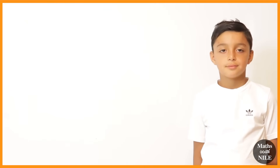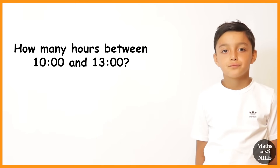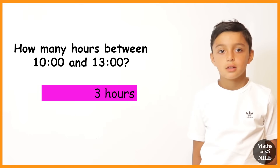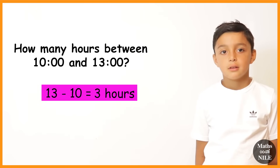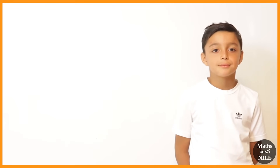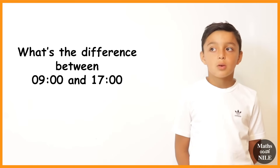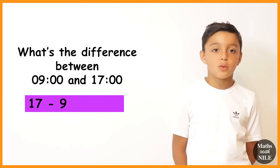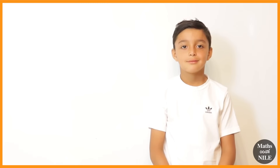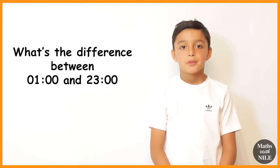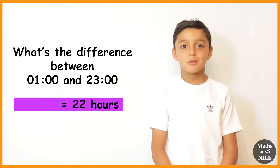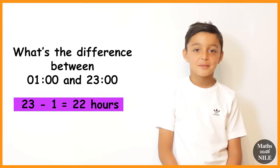One last benefit of the 24-hour clock, Niall — we can work out the difference between times very easily. How many hours between 1,100 hours and 1,300 hours? Three hours — you just take 11 from 13 and it's 2. What's the difference between 0900 hours and 1,700 hours? 17 take away 9 is 8, so 8 hours. What's the difference between 0100 hours and 2,300 hours? 23 take away 1 is 22 hours.